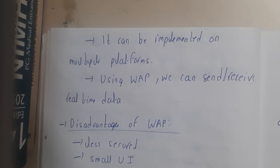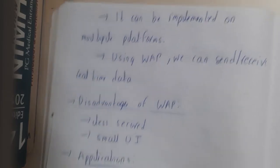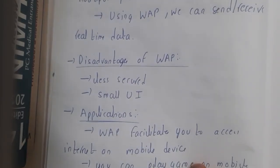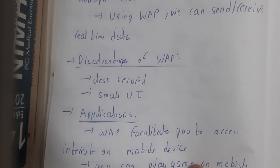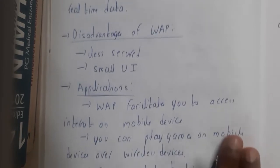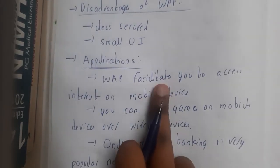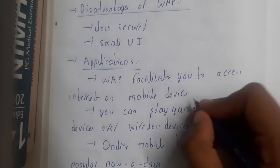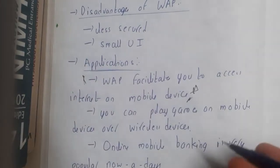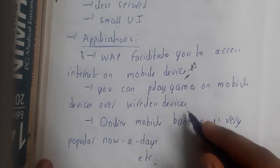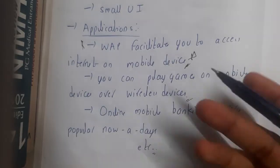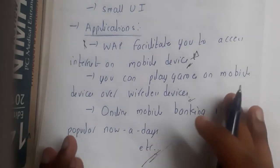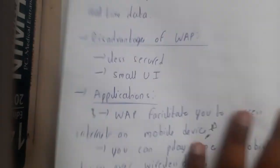WAP also supports sending and receiving real-time data. The disadvantages include some security issues and a limited UI base, meaning you cannot create complex interfaces. The major application of WAP is facilitating internet access via mobile devices. It also enables online mobile banking, playing games on mobile devices over wireless networks, and many other online services.